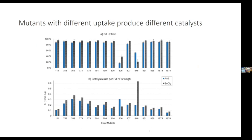This is where we are right now. We have mutants where we have differences in palladium uptake into the cell. On the top, you see mutants with random numbers. 111 is the wild type E. coli that we're using, so the one to the very left. What you see is that a lot of mutants have the same capacity for uptake of palladium salts, but there's a few that take up palladium much less efficiently.